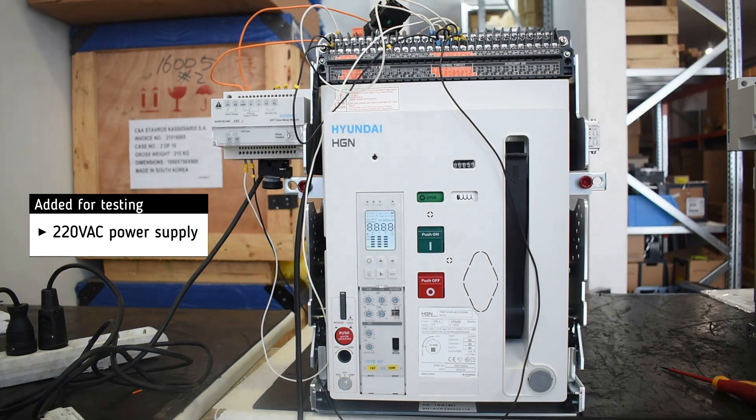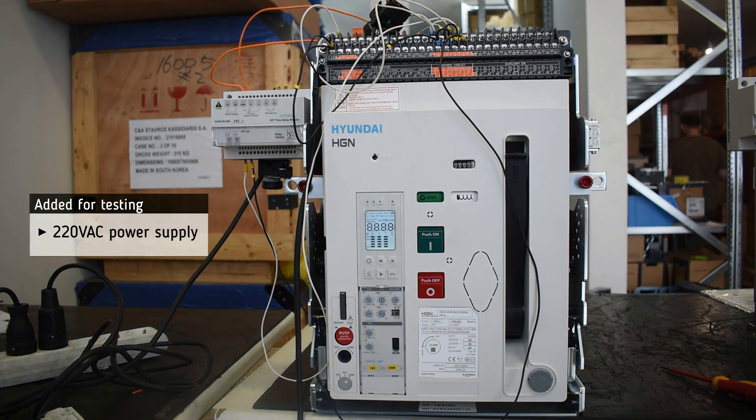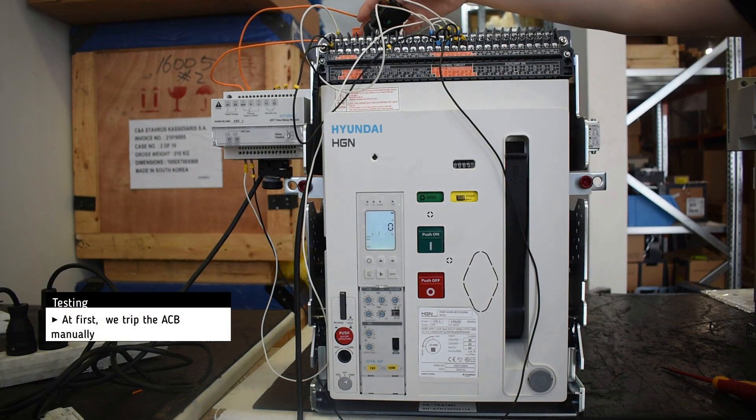For testing, we add a 220V AC power supply. We trip the breaker manually.